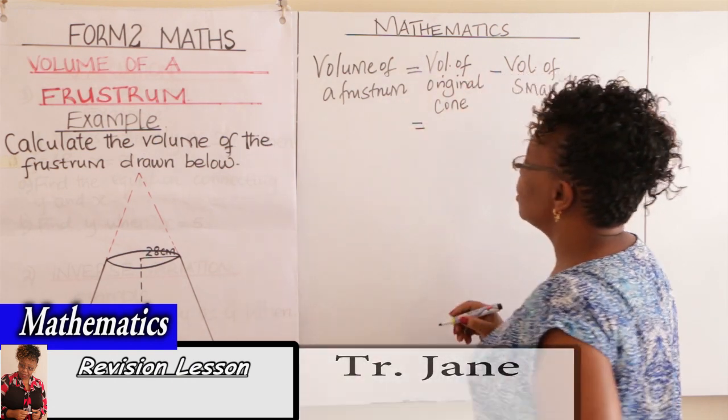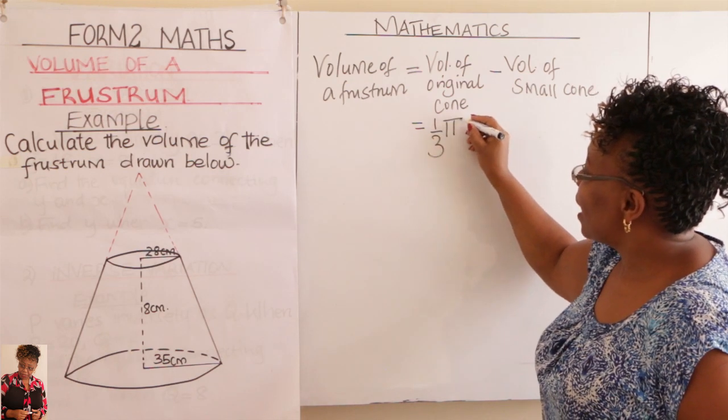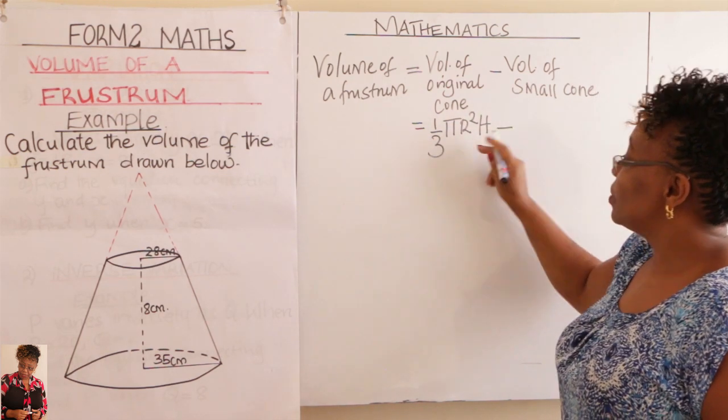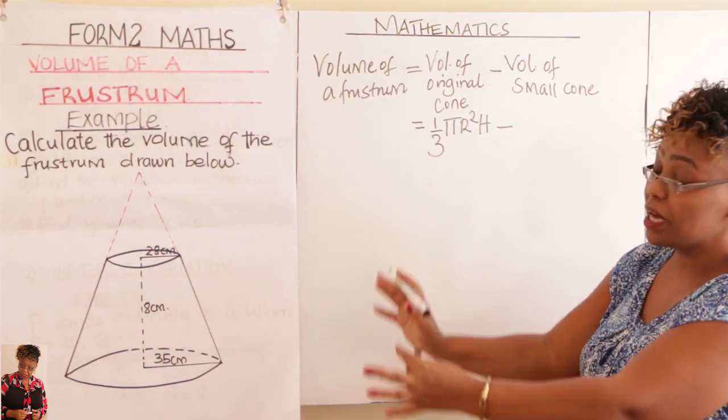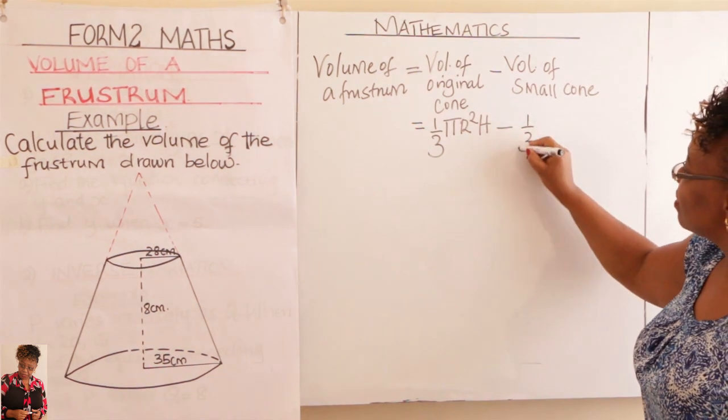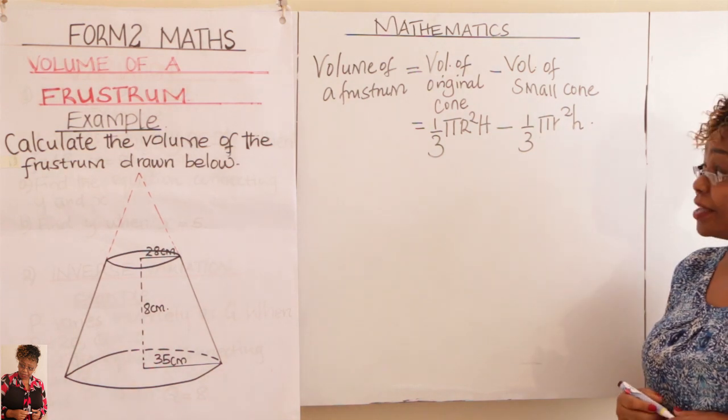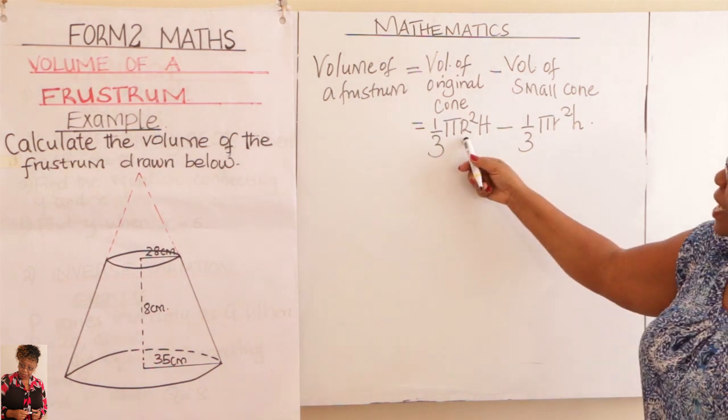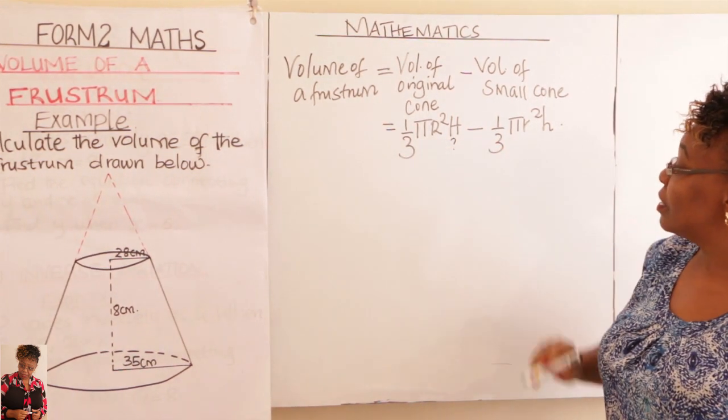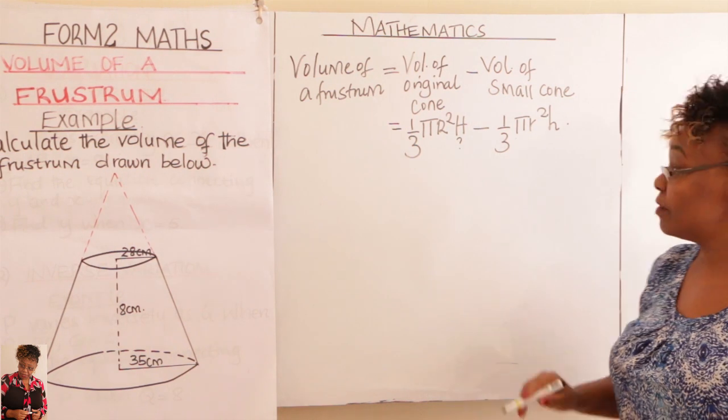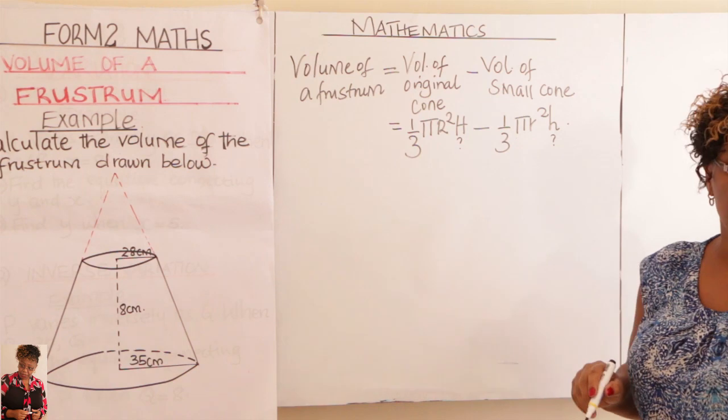Volume of the original cone will be obtained using one-third π R squared H. We use capital letters for R and H because we are talking about the big cone. Then you subtract the volume of the small cone. So you look at our formula here. What do we have and what don't we have? We don't have h here. We have r which is 35. We have r again there but we don't have h.